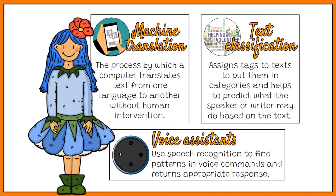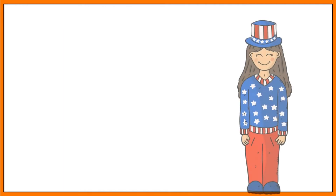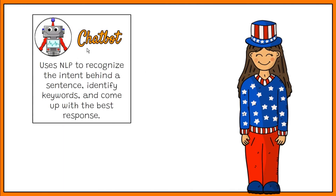Text Classification involves assigning tags to text to put them in categories. This helps predict what the speaker or writer may do based on the text they are producing. Text classification can be used for chatbots. A chatbot is a computer program that simulates human conversation. Chatbots use NLP to recognize the intent behind the sentence, identify relevant topics and keywords, and come up with the best response.